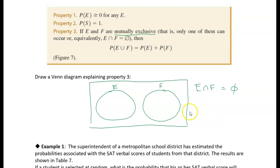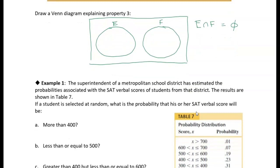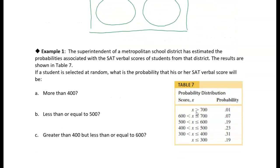All right, so let's take a look at the first example here. This is an example with mutually exclusive events. We've got the superintendent of a metropolitan school district has estimated the probabilities associated with the SAT verbal scores of students in that district. And the results are shown in the table. And you can see that they're broken down by score. You've got scores less than 300, 300 to 400, 400 to 500, 500 to 600, 600 to 700, and above 700. And you can only get one score on the SAT for the verbal score.